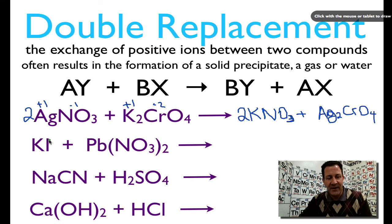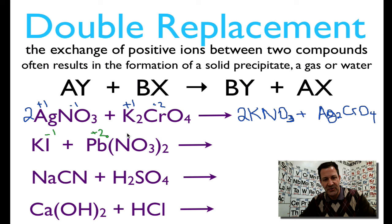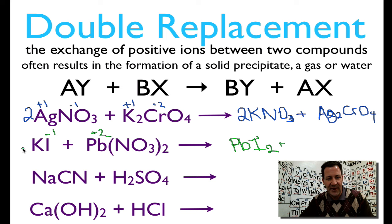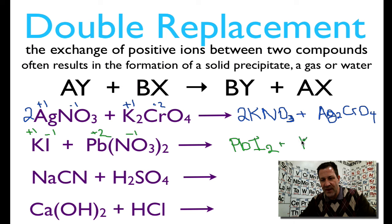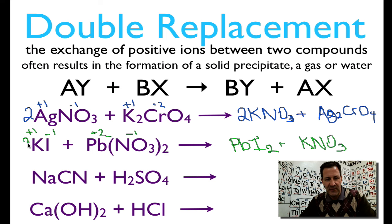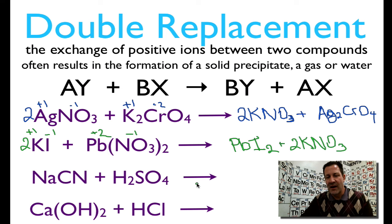Now let's do the next one. We have potassium iodide and lead nitrate. Let's do the inner two first: iodide forms a minus-one charge and lead is plus-two, so one of our products is going to be PbI₂. The other product is potassium, which is plus one, and nitrate, which is minus one — so we get KNO₃. Let's balance that: we have two iodines, so we put a two in front of KI, and a two in front of KNO₃. That gives us two potassiums, two nitrates, two potassiums, two iodines, two nitrates, and one lead. The equation is balanced.